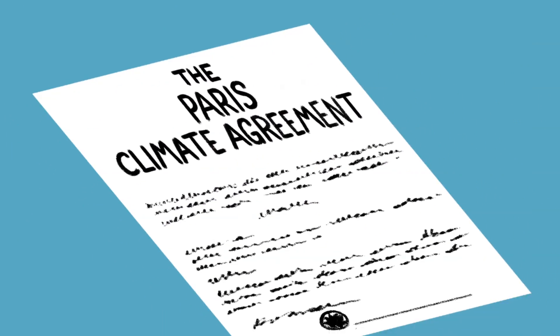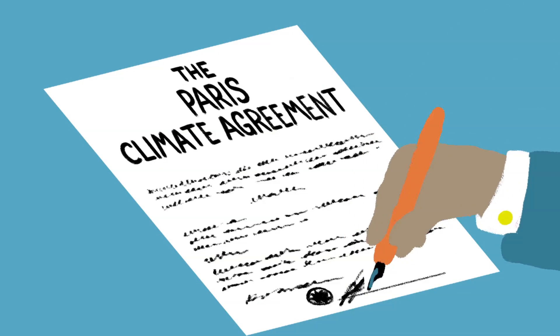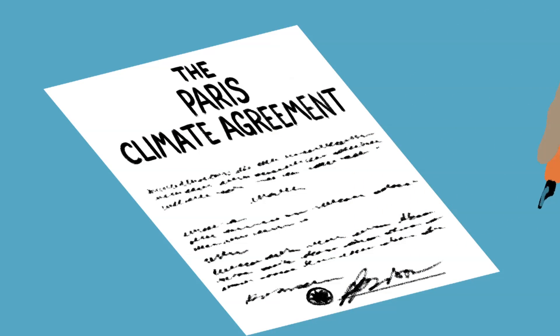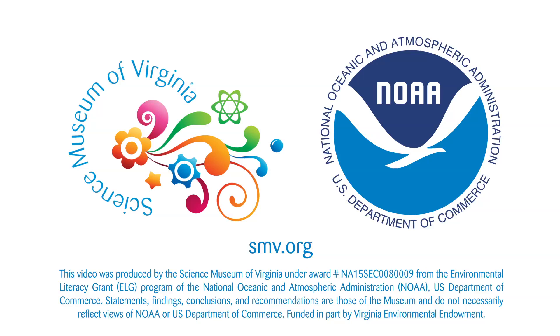This new technology provides an accurate scientific tool to allow accountability to be factored into future climate decisions. For more information, please visit smv.org. This climate science piece is funded by NOAA and the Virginia Environmental Endowment.